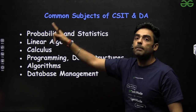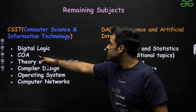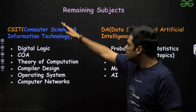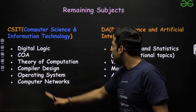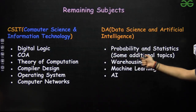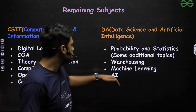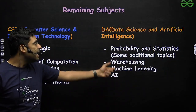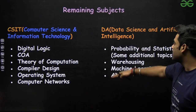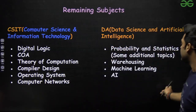These subjects you have to study for both. The remaining subjects for CSIT are: Digital Logic, COA, Theory of Computation, Compiler Design, Operating System, and Computer Networks. For DA, only three extra subjects remain — since probability and statistics is already largely covered by CSIT, you additionally need to study Machine Learning, AI, and a bit of Data Warehousing. DA has the shortest syllabus among these combinations.